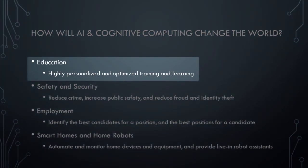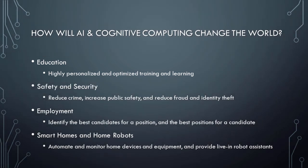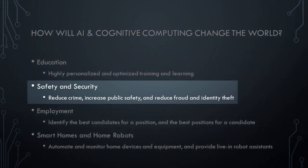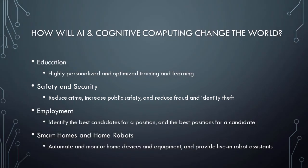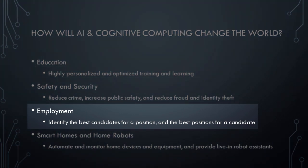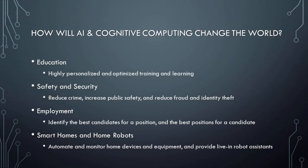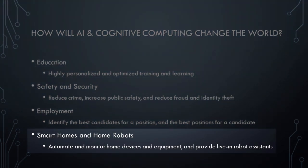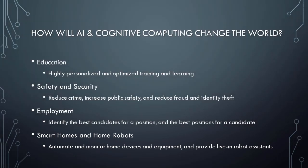In the education sector, AI and cognitive computing will be used to deliver highly personalized and optimized training and learning experiences. In the safety and security sector, AI and cognitive computing will be used to reduce crime, increase public safety, and reduce fraud and identity theft. In the employment sector, AI and cognitive computing will be used to identify the best candidates for a position and the best positions for a candidate, thus improving people's life satisfaction. In the smart home and home robot sectors, AI and cognitive computing will be used to automate and monitor home devices and equipment, and provide live-in robot assistance that will free up time, improve quality of life, and allow older people and people with disabilities to continue to live independently.